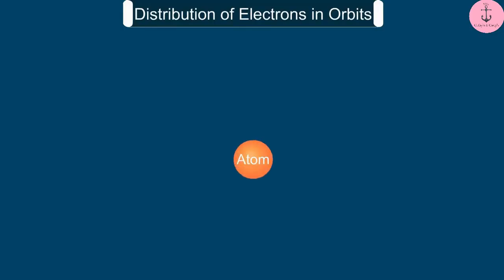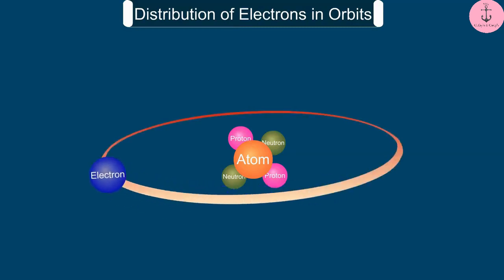In the previous video, we saw that the protons and neutrons in an atom exist in its nucleus, and electrons revolve around the nucleus in well-defined orbits. Let us now see how electrons are distributed in different orbits of an atom.